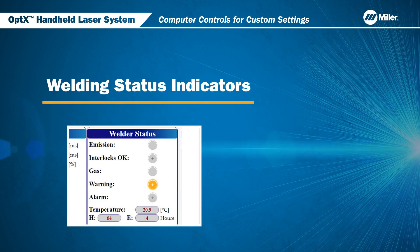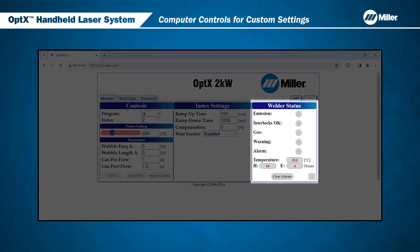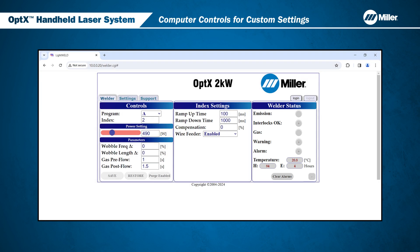Now let's go over the Welder's Status section. The Welder's Status section is a graphical representation of the Optics front panel indicators. This will enable you to troubleshoot which particular status or alarms are causing the error or warning. When all interlocks are satisfied, the main indicator in the Welder's Status pane will be green. Clicking on the circle with the plus sign will expand to show the list of 8 interlocks that must all be satisfied before welding can begin. If the 8 interlock indicators are lit green, it means interlock status is OK and welding can now begin.